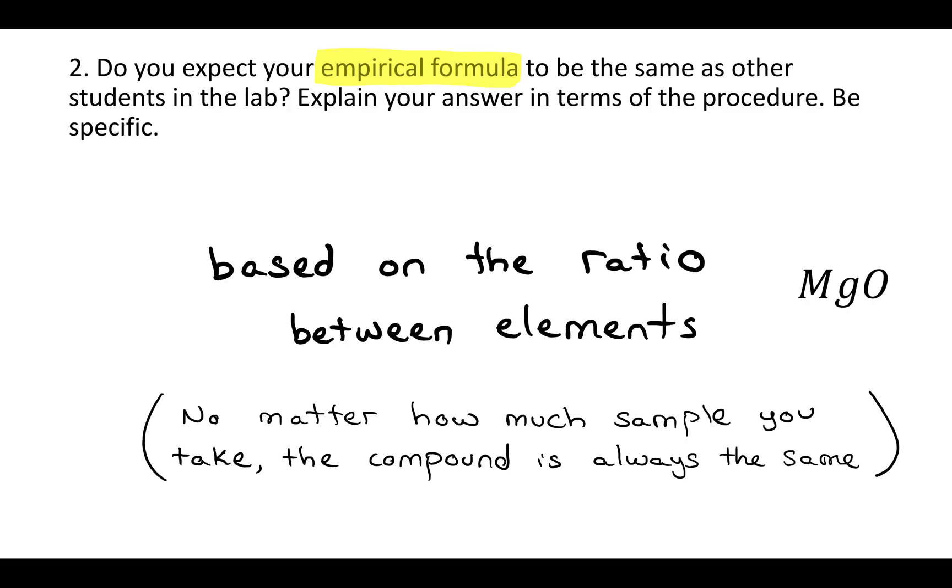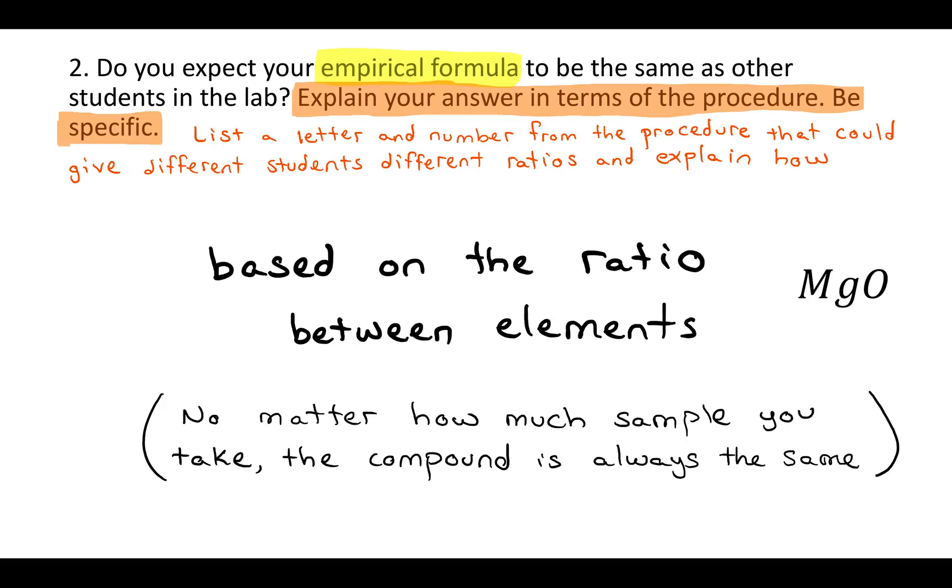But, that assumes that nothing could go wrong. And so for the second part, where they say to explain your answer in terms of procedure, what they're really asking is, where could that theoretical scenario go wrong? How could different students do things that would mess up that ratio? Here, you want to list a letter and a number from the procedure that could give different students different ratios, and then explain how they could give students those different ratios. Your answer to question one should help you a lot with this.